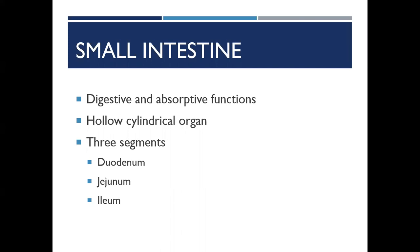Contents that remain undigested after passing through the small intestine, such as fiber — the indigestible portion of plant food — enter into the cecum in the right lower quadrant of the abdomen.